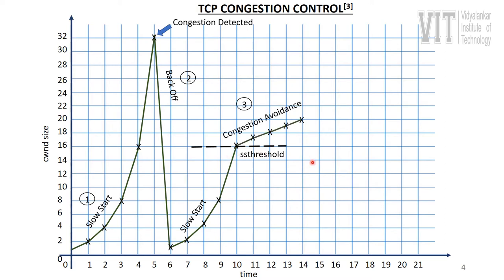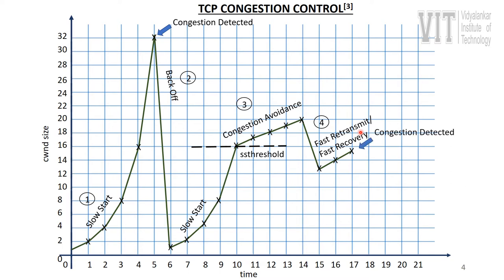This threshold of 16 is set, and from here onwards congestion avoidance will happen. Congestion avoidance is a linear increase in the congestion window size, unlike slow start which is an exponential increase. Suppose congestion is detected again further ahead. In this case fast retransmit and fast recovery will happen. Due to the congestion detected there will be a decrease, and instead of going back to the slow start phase again, it will perform fast retransmit and fast recovery.